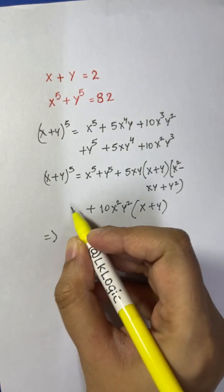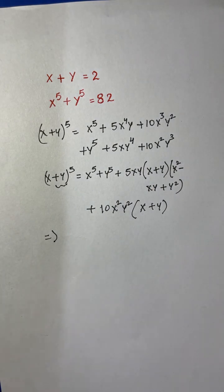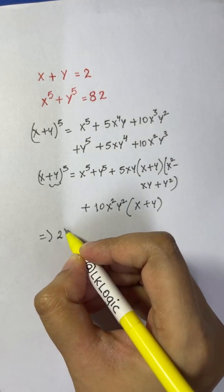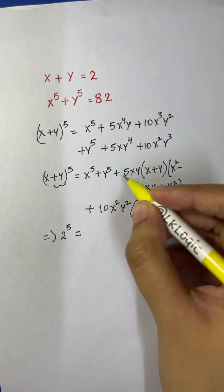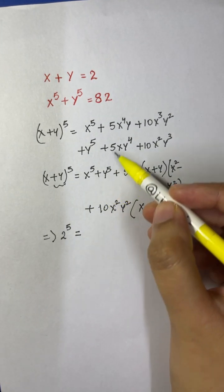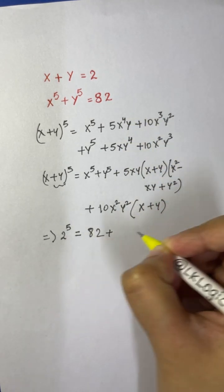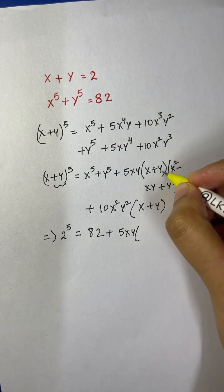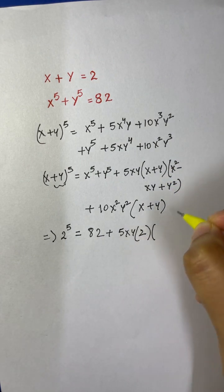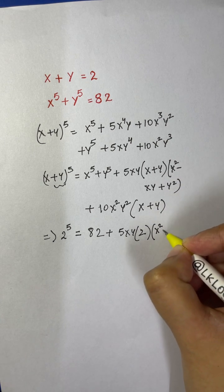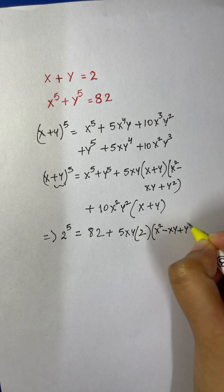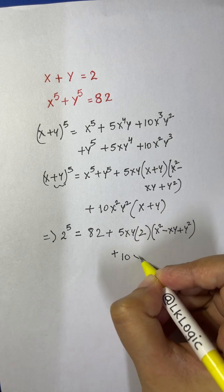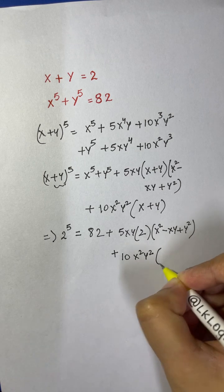The next thing I can do is simplify x plus y, which as given in the question equals 2. So I write: 2 to the power of 5 equals — using x to the 5 plus y to the 5 equals 82 — 82 plus 5xy times 2 times (x squared minus xy plus y squared) plus 10x squared y squared times 2.